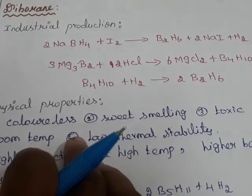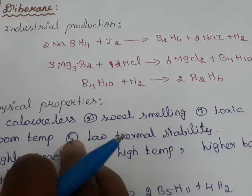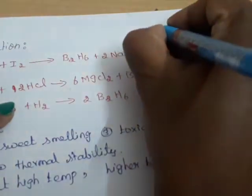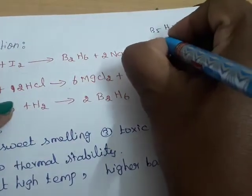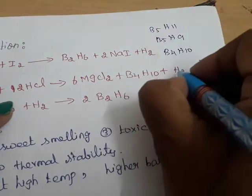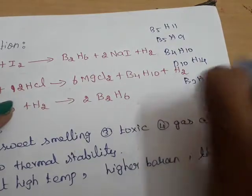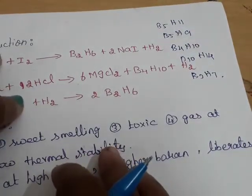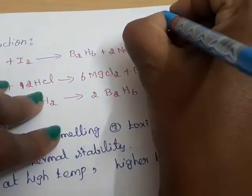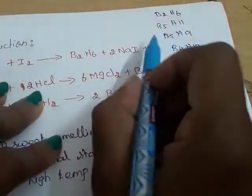Good morning students. Today we are going to see the topic Diborane. Diborane is a hydride of boron. Boron has many hydride compounds, for example B5H11, B5H9, B4H10, B10H14, B3H7 — there are many hydrides of boron. The simplest hydride of boron is B2H6, which is called Diborane.